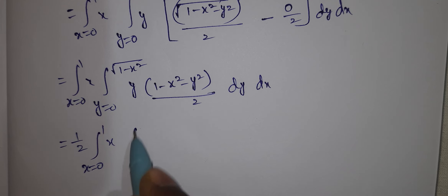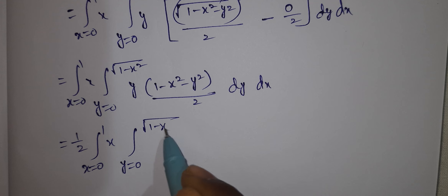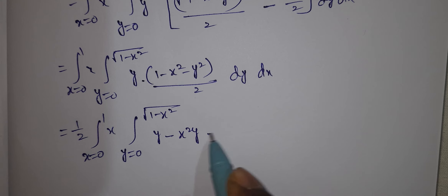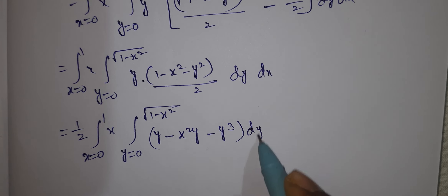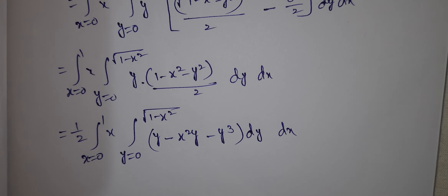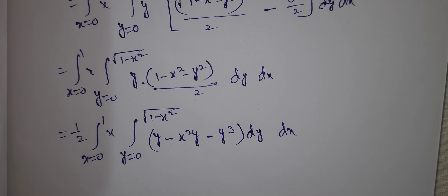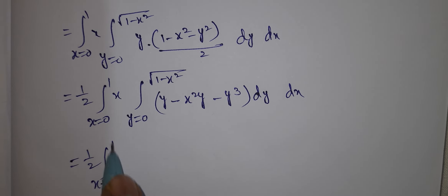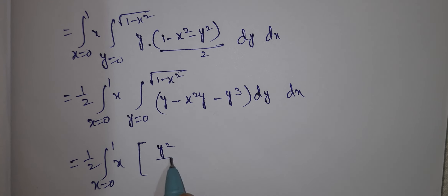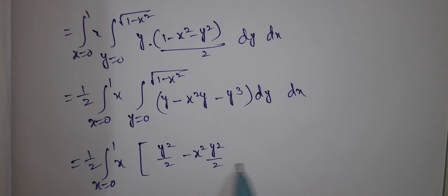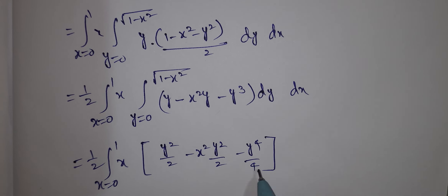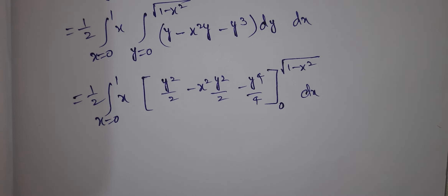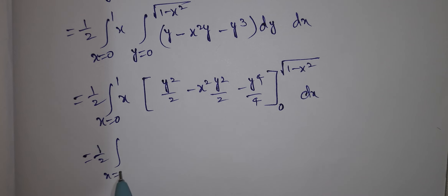That equals 1/2 times integral x = 0 to 1, y = 0 to √(1-x²), of (y - x²y - y³) dy dx. Integrating with respect to y gives: y²/2 minus x²y²/2 minus y⁴/4, evaluated from 0 to √(1-x²), into dx.